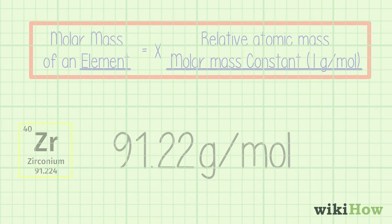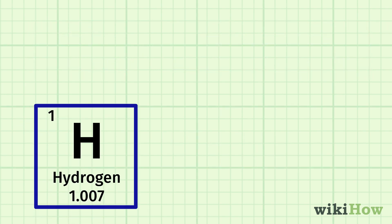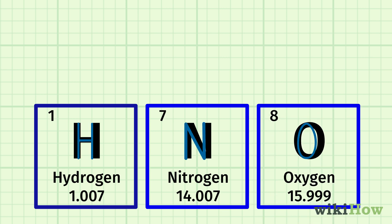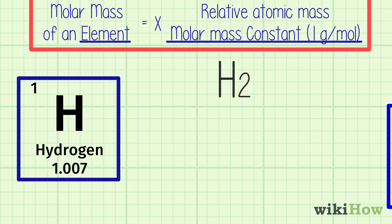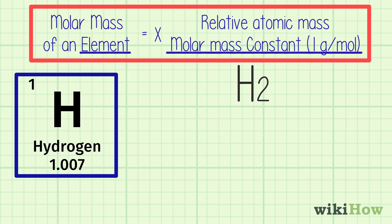However, some elements such as hydrogen, nitrogen, and oxygen only occur naturally in molecules of two or more atoms. In these cases, you'll need to multiply the relative atomic mass of the element by the number of atoms in the molecule, then multiply the result by the molar mass constant.